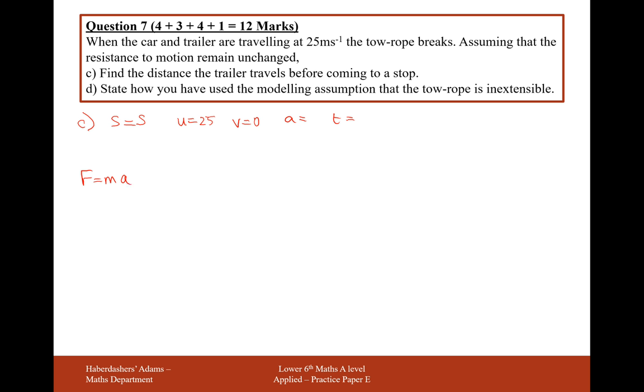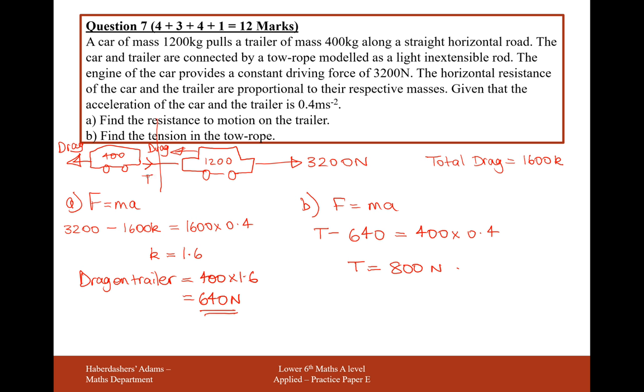So now going forward, if we look back at our diagram, this tension in the tow bar is going to be completely lost now. So when we do our F equals ma, all we're going to have left now is just the drag on that trailer. It's just going to be minus 640.